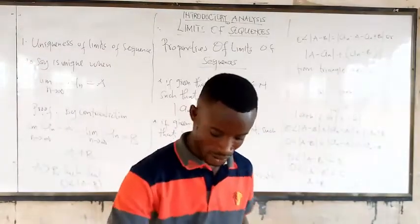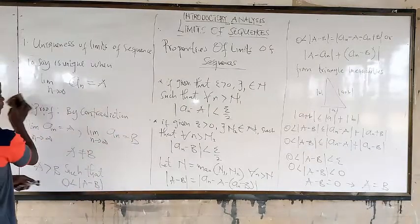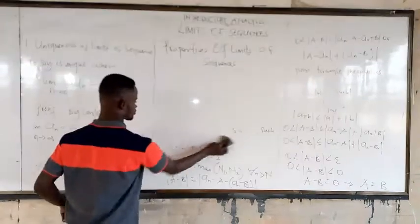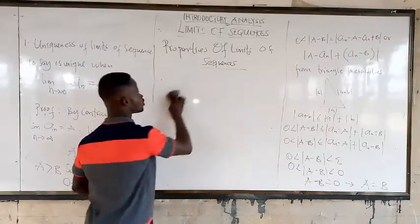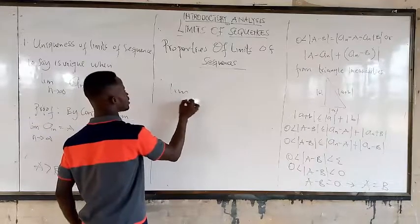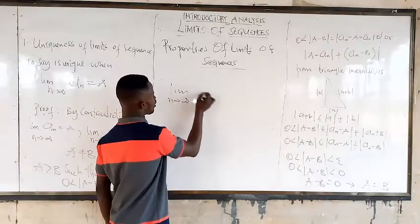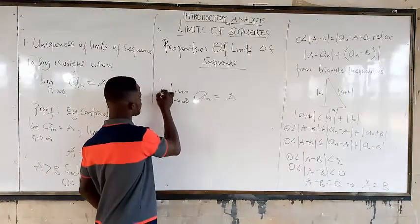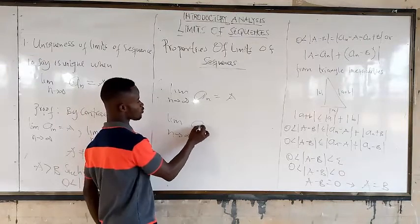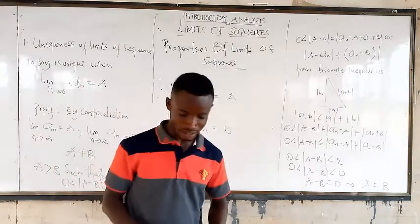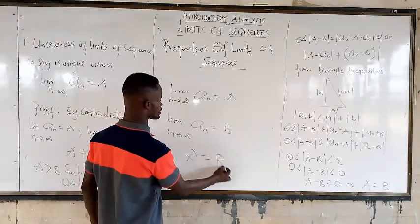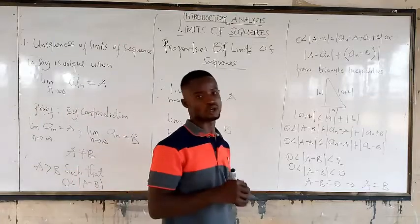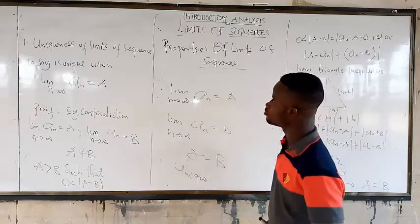So in such a case, let's take the limit. We take the limit as N approaches infinity of A of N is equal to A. Then we also take the limit as N approaches infinity of A of N is equal to B. Then we can now say that A is equal to B. So this makes it unique. This is the proof of uniqueness of limit of sequence.